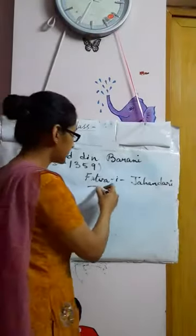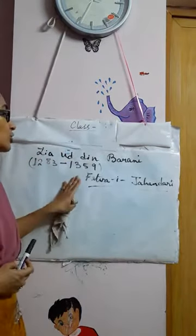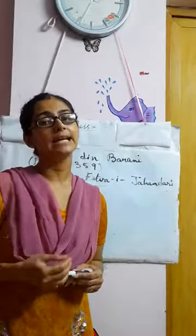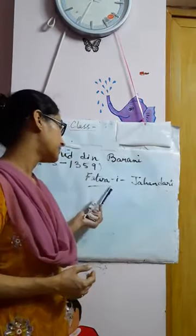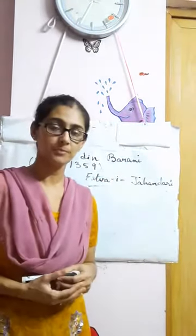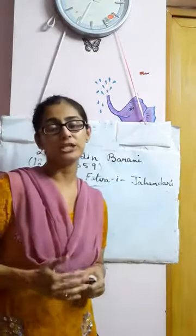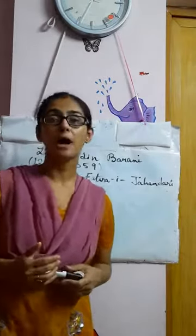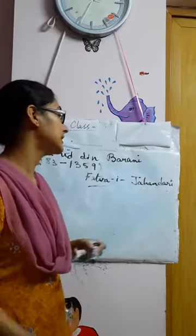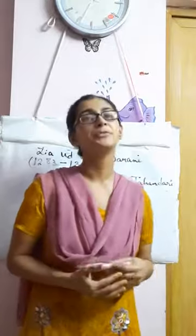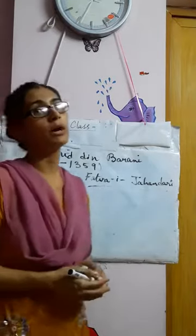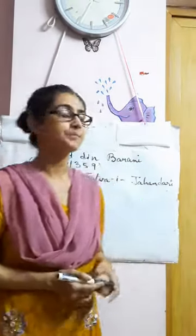His most famous work is Fatwa-i-Jahandari, from which we get the idea of the nature of the state during the Delhi Sultanate. Apart from this, he has also written Tarikh-i-Firuz Shahi, which gives us an account of the administration during the time of Firuz Shah, and Tarikh Barmi, another famous work. But Fatwa-i-Jahandari is the most famous and popular, so we will discuss this book to understand the nature of the state during the Delhi Sultanate.